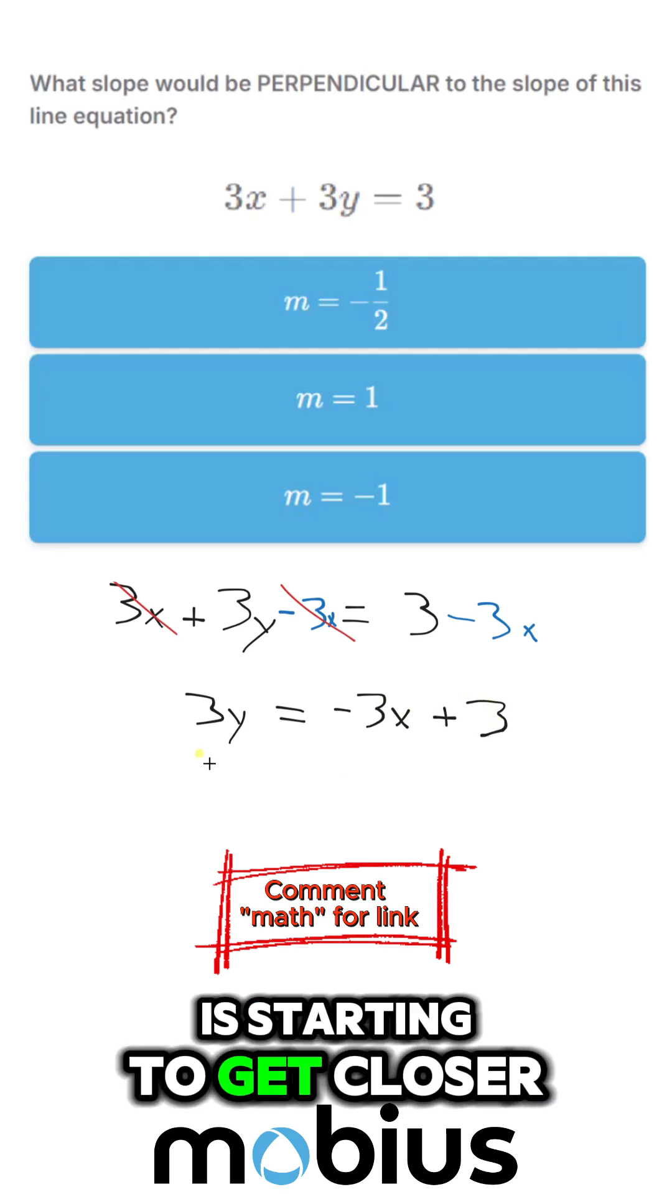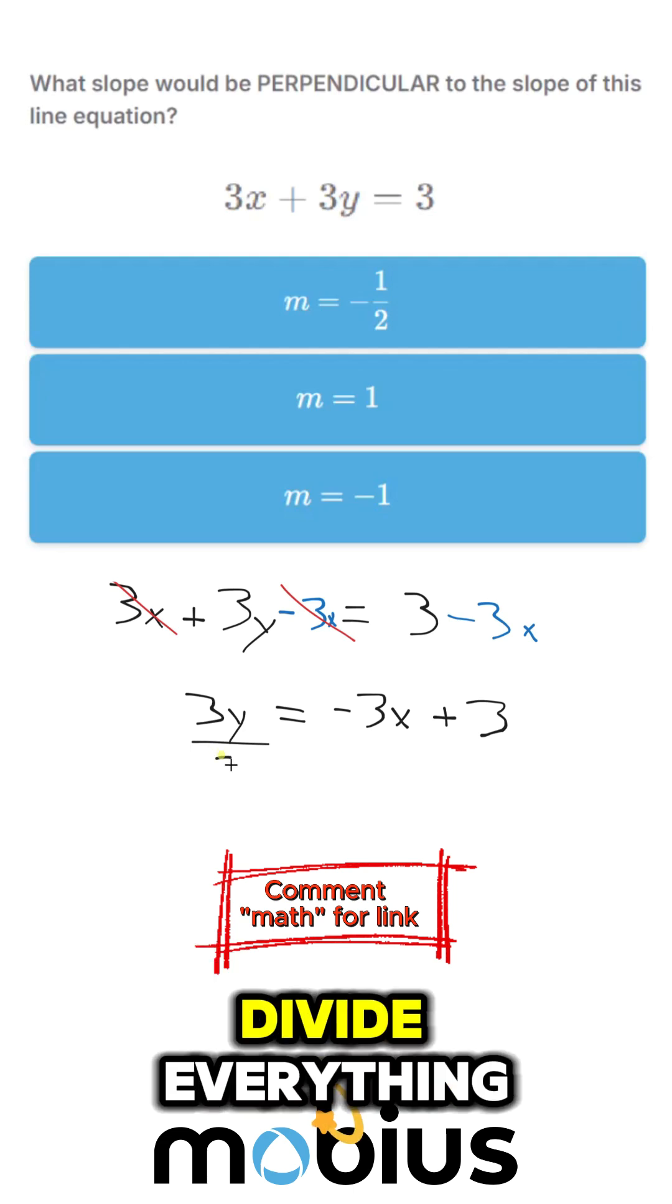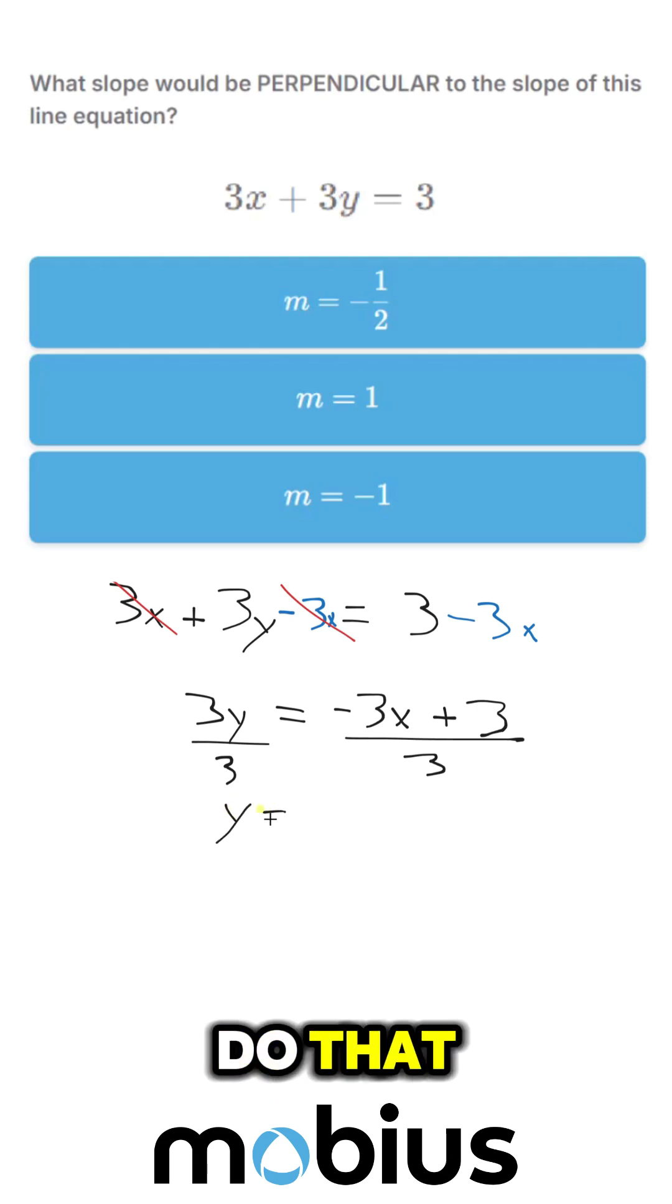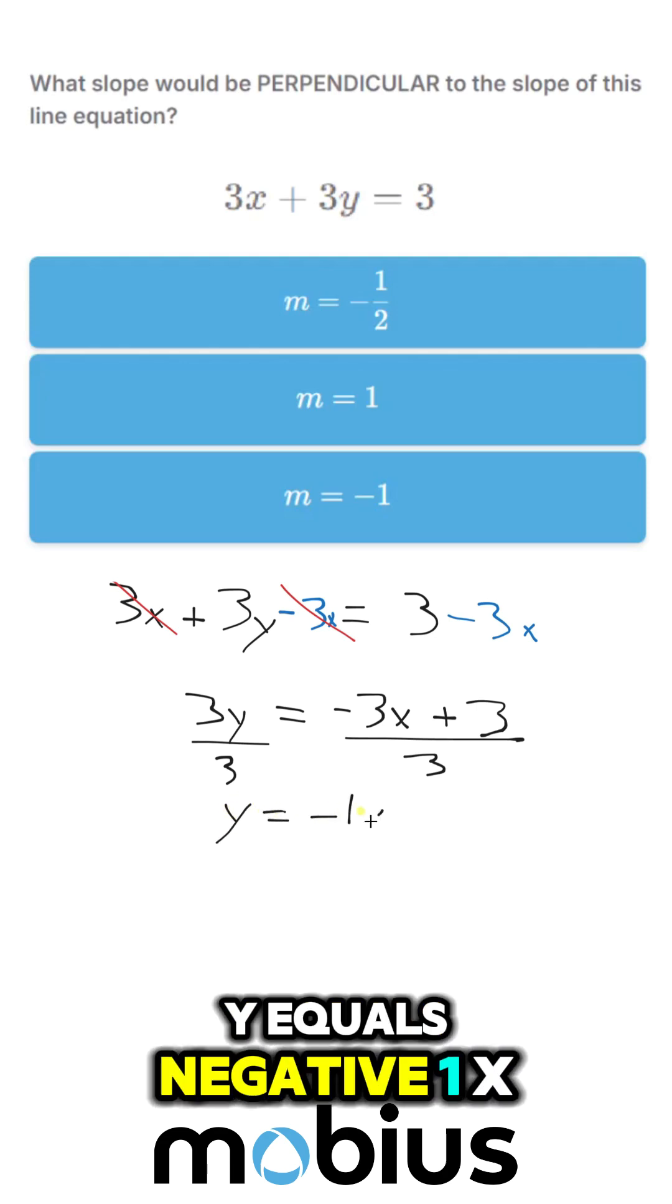You can see this is starting to get closer. Now we're just going to divide everything by 3, and if I do that, y equals negative 1x plus 1.